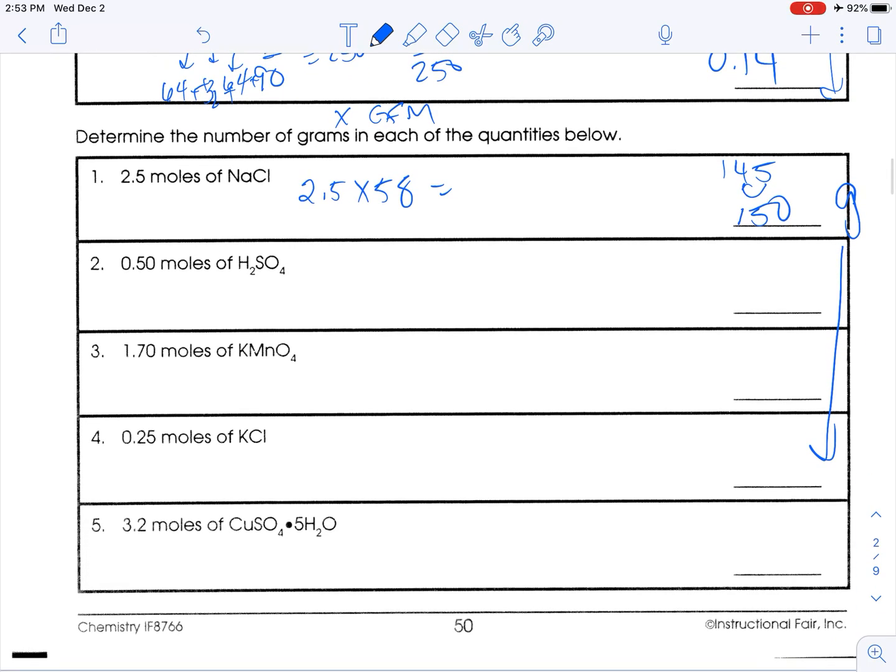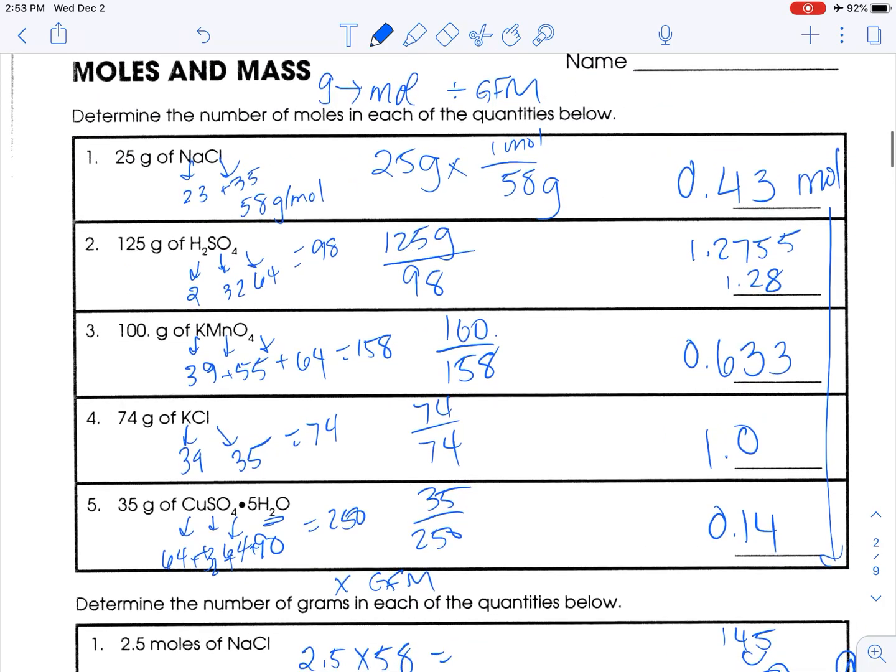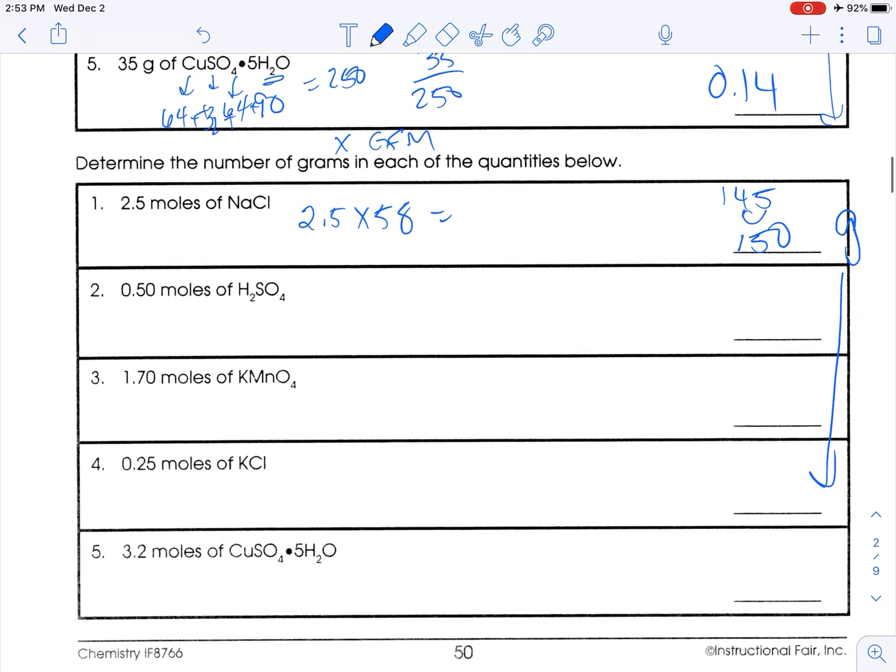Okay, the GFM of the second one is 98. So 0.50 times 98 is 49, which is the proper number of sig figs.